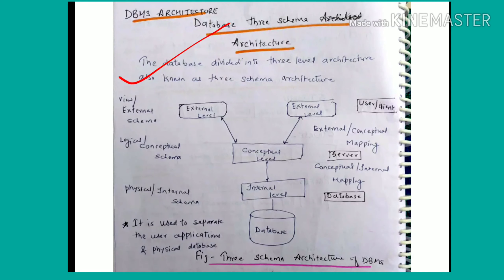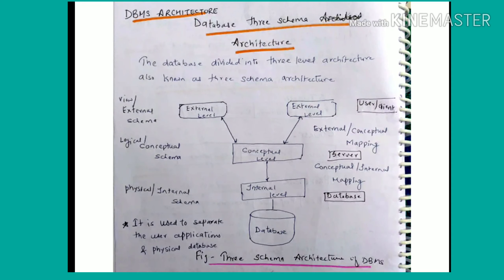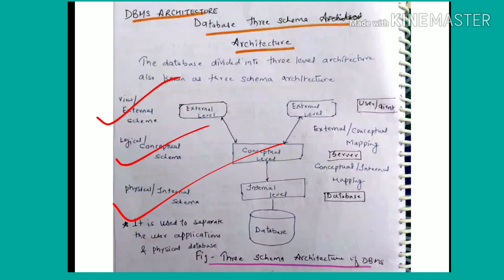The database divided into three-level architecture is also known as three-schema architecture. At the external level there are users and clients who work on the screen. At the conceptual level, programmers develop application programs. At the internal level, data is physically stored. The view and external schema is used at the external level, the logical and conceptual schema at the conceptual level, and the physical and internal schema at the internal level.